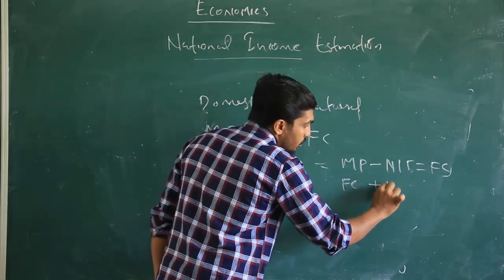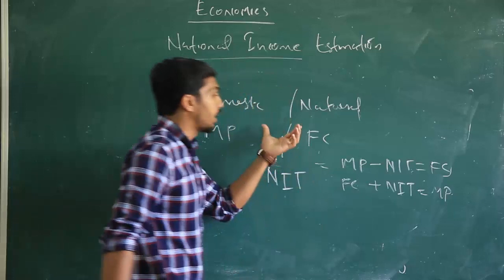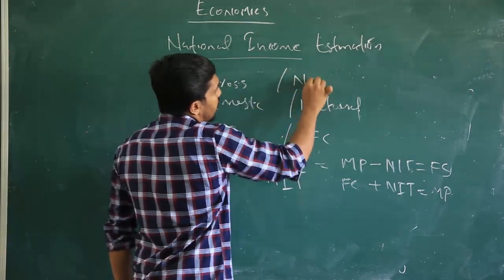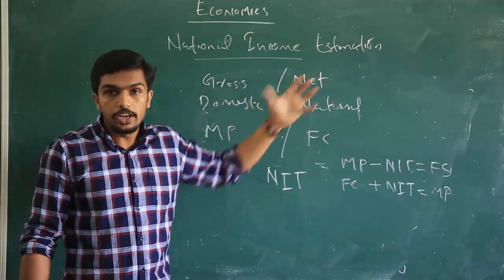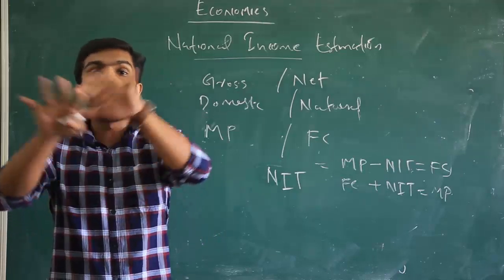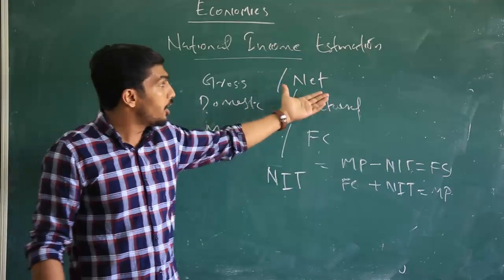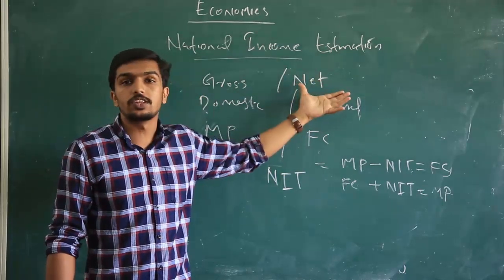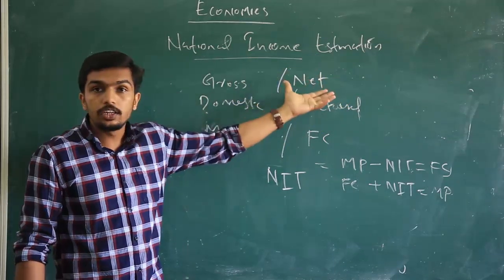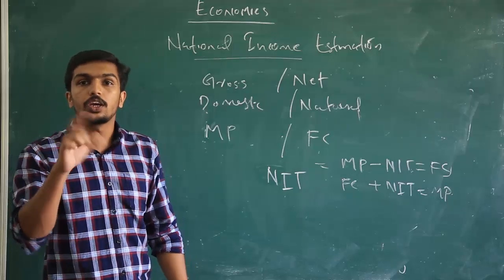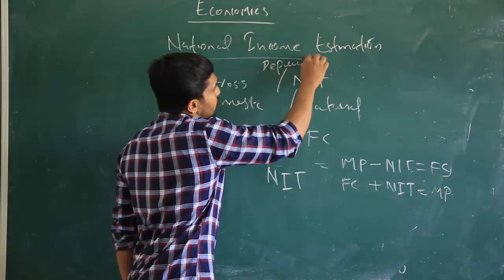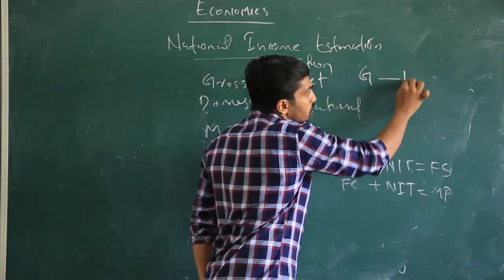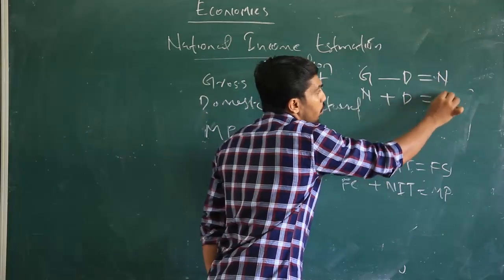The third concept involves gross and net values. In National Income variables, we can express things in gross or net terms. Gross terms means the total figure — we consider all types of transactions in the economy including the external sector. Net terms means we are excluding certain payments and depreciation. The remaining value we consider as net transactions. The major difference between gross and net is depreciation. Gross variable minus depreciation gives the net value, and net value plus depreciation gives the gross value.